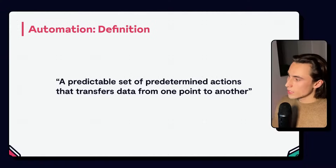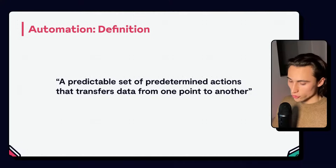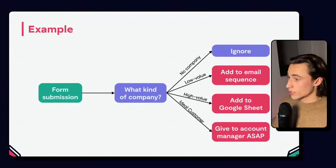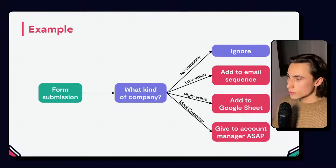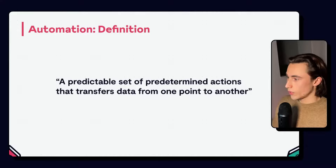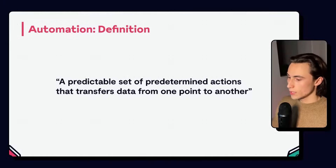As you can imagine, if we do not have a predictable set of predetermined actions and depending on the kind of company we weren't able to say, if it's this kind of company we do this, if it's that kind of company we do that, then we wouldn't be able to create an automation, because we would have to have some kind of human intervention. If we do not have any data transfer, then we're not really automating anything.